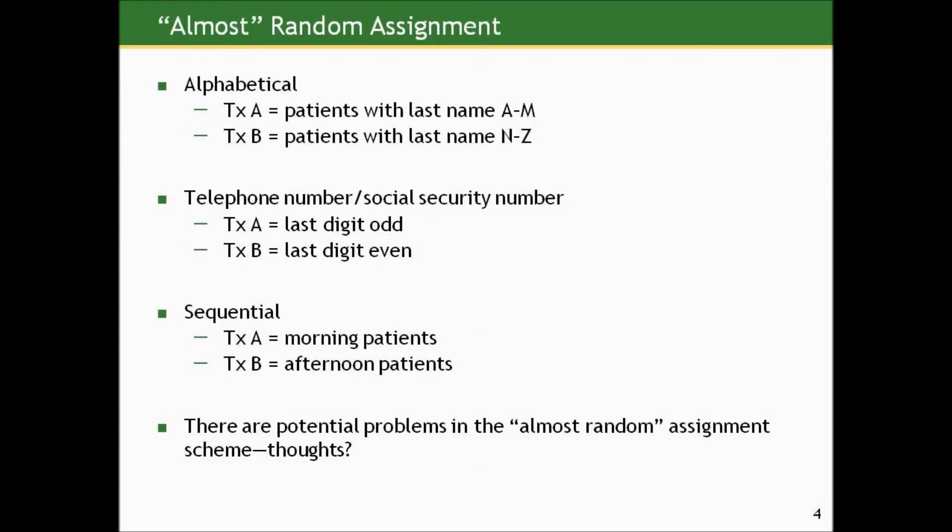There are other methods, what we'll call almost random assignment. For example, alphabetical. If we were randomizing patients at a clinic to one of two groups, maybe we'll take everybody with last names A through M, put them in treatment A, and put patients with last names N through Z into treatment B. We could use a telephone number or social security number. Treatment A if the last digit were odd, treatment B if the last digit were even.